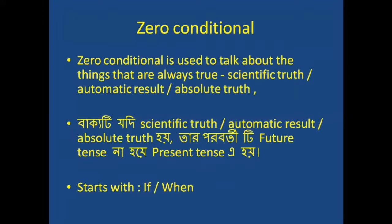The first one is zero conditional. Zero conditional is used to talk about the things that are always true - scientific truth, automatic result, or absolute truth. Zero conditional starts with 'if' or 'when'. The structure is: if plus present indefinite plus present indefinite, or when plus present indefinite.